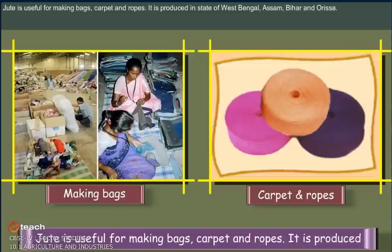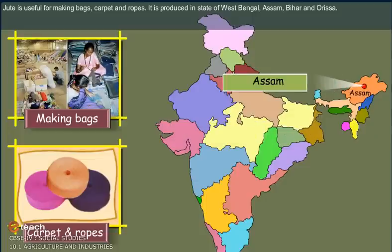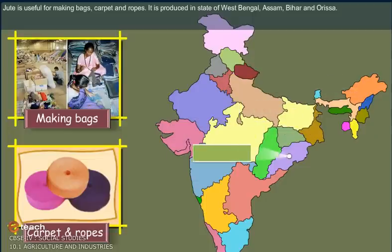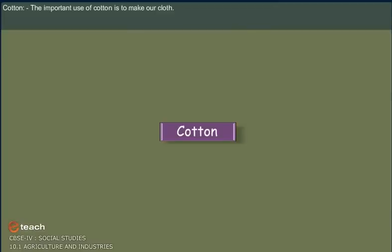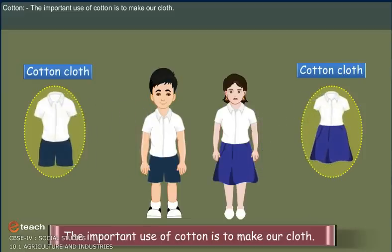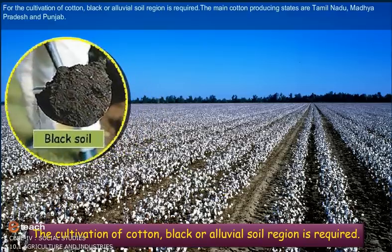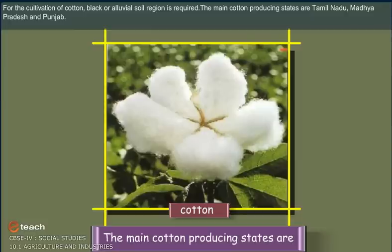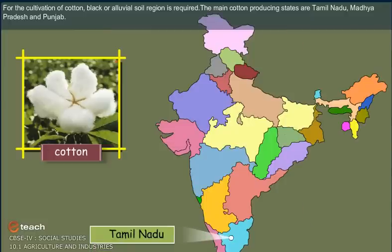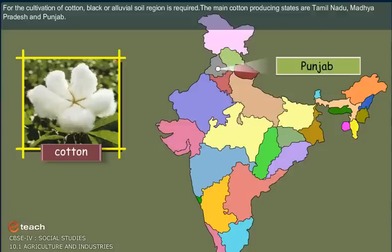Jute is useful for making bags, carpets, and ropes. It is produced in the states of West Bengal, Assam, Bihar, and Orissa. Cotton is used to make clothes. For the cultivation of cotton, black or alluvial soil regions are required. The main cotton-producing states are Tamil Nadu, Madhya Pradesh, and Punjab.